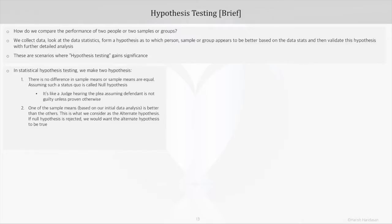This hypothesis may be right or wrong, that's what we try to prove through our subsequent analysis. If this hypothesis is wrong, then we need to know what should be right, and that would be our alternate hypothesis, which in this case we can state as one of the sample means is better than the others.